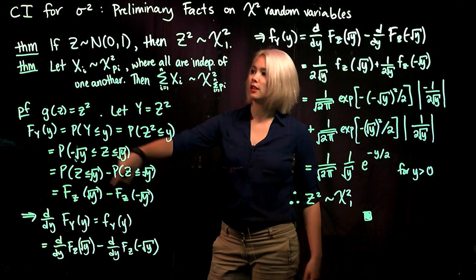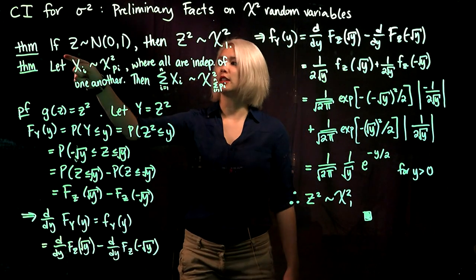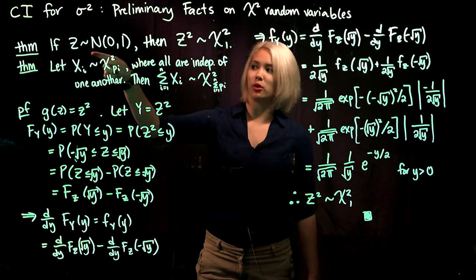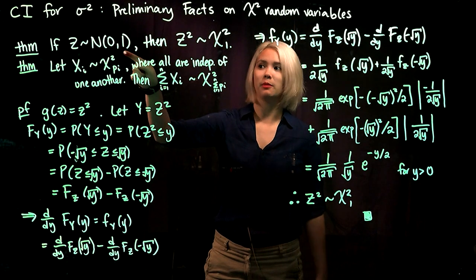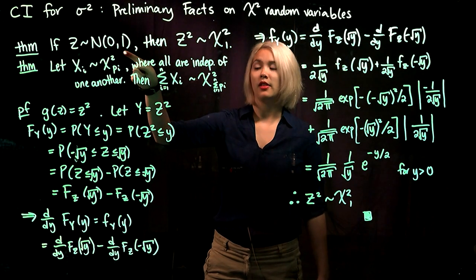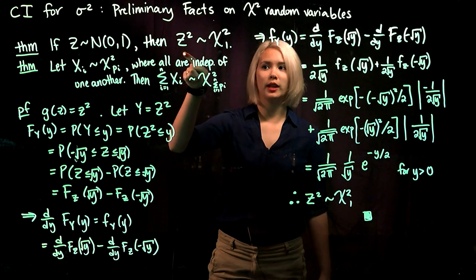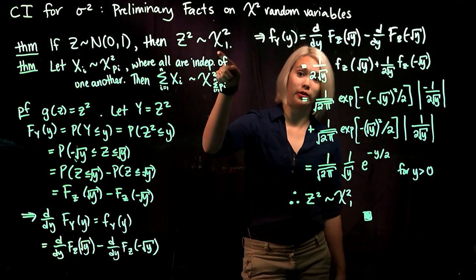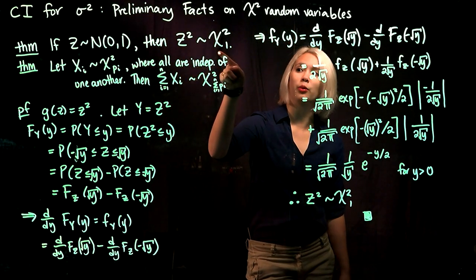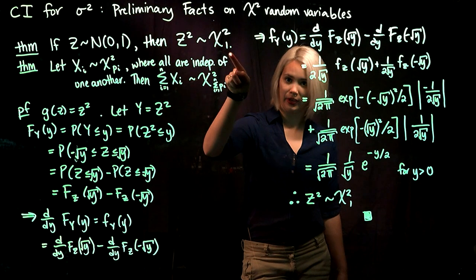The first theorem is: if we have a standard normal random variable, then if we square it, we'll end up with a chi-squared random variable with one degree of freedom.